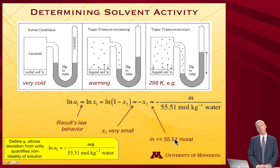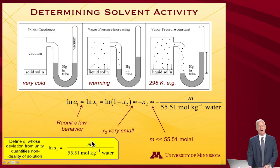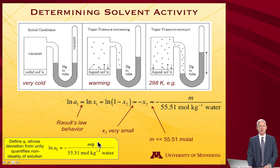So now I want to define another quantity — I'll call it little phi — where the deviation from unity of phi quantifies the non-ideality of my solution. What I'm measuring, log of the activity, using this little vapor pressure tube, is going to be equal to −m·φ / 55.51 mol/kg of water.